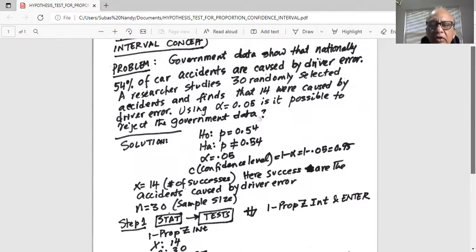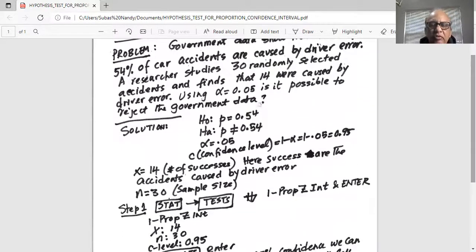So we are going to use the confidence interval concept. We are going to calculate one prop z interval or one proportion z interval. So we go to the calculator, put the calculator on, then press the stat button,